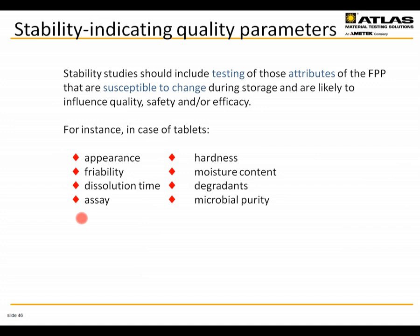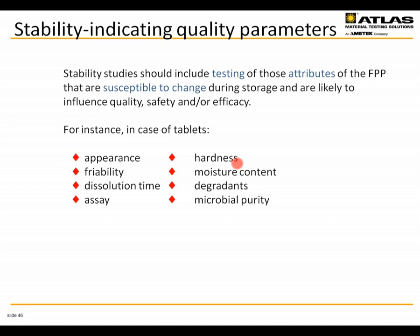Around 15% API loss is a fairly good level to shoot for, with at least one of the relevant degradants observed and detected in the assay — that would be a predictive result. Besides analytical assays, we must also be concerned with stability related to appearance — for example, if a tablet changes color a patient may be reluctant to take the prescribed dose — as well as friability, dissolution time, moisture content, microbial purity, and hardness. We need to consider all aspects of product stability.